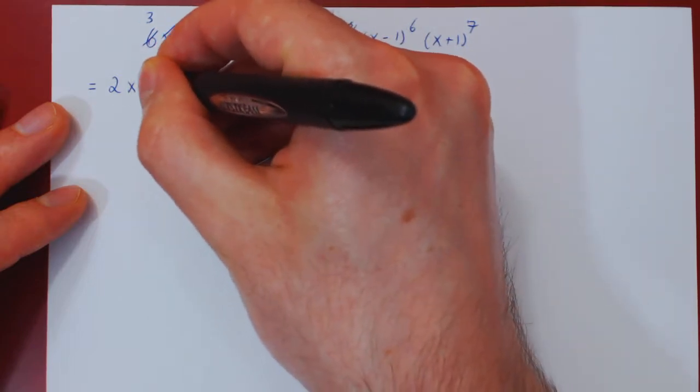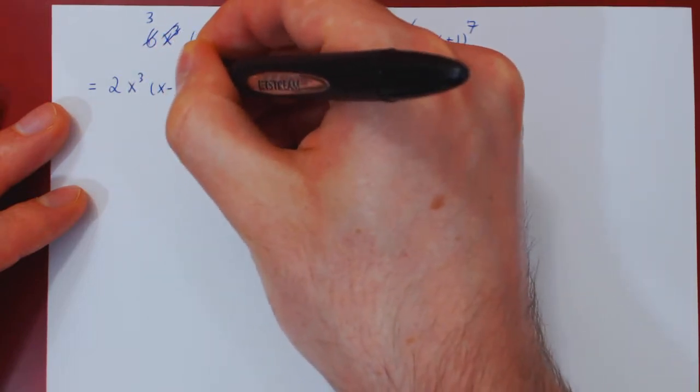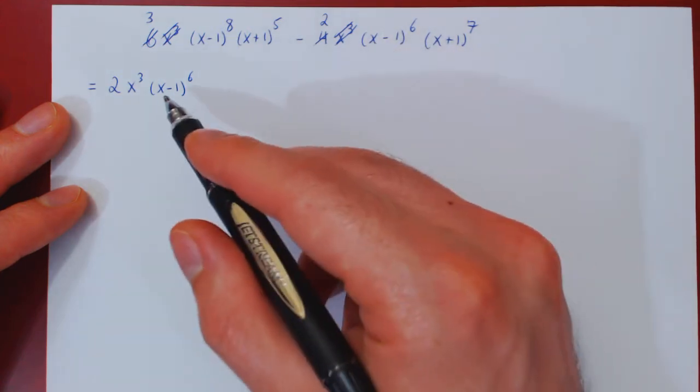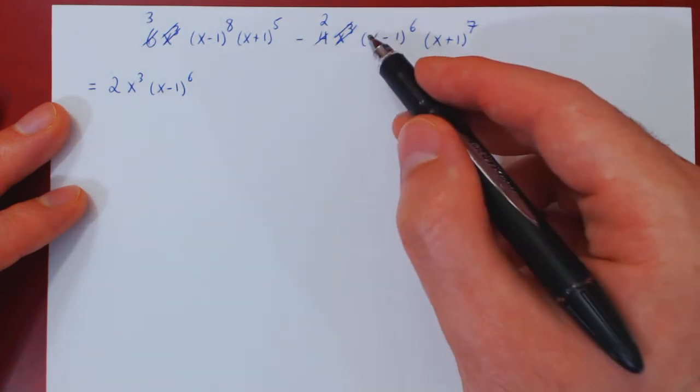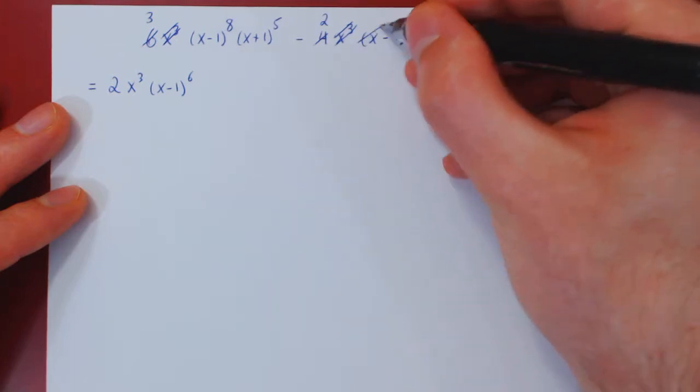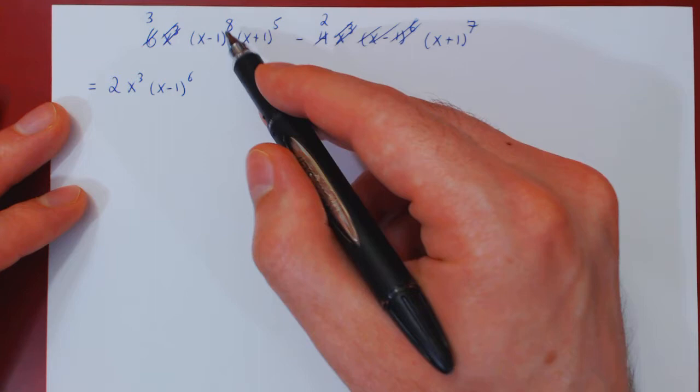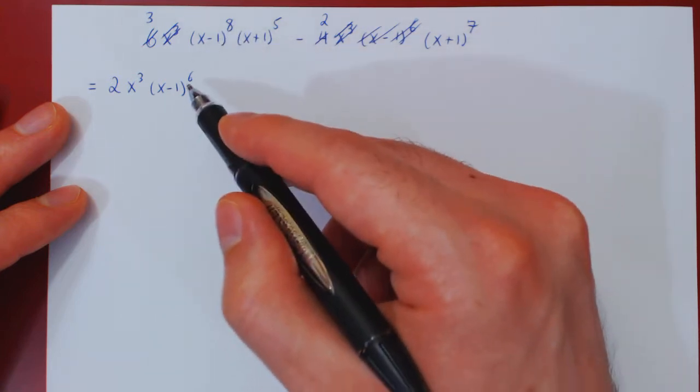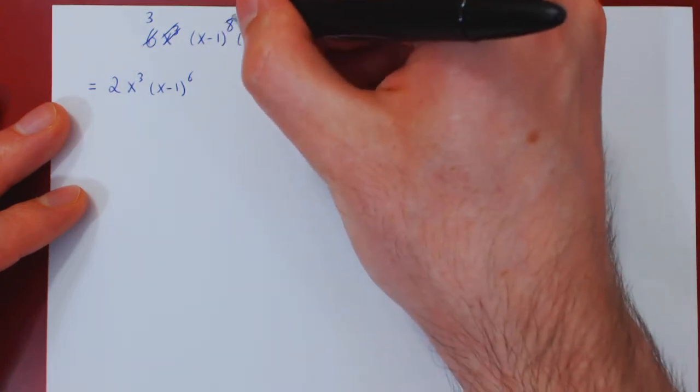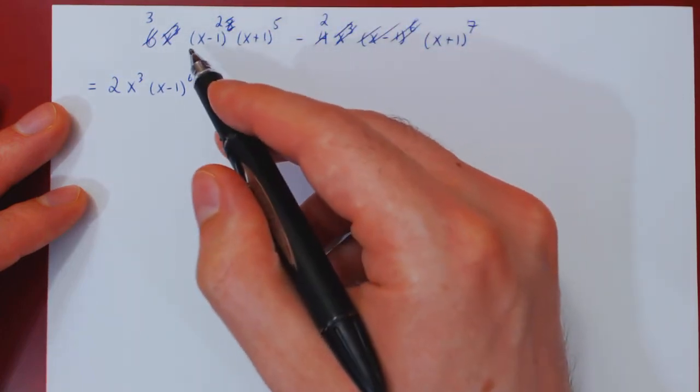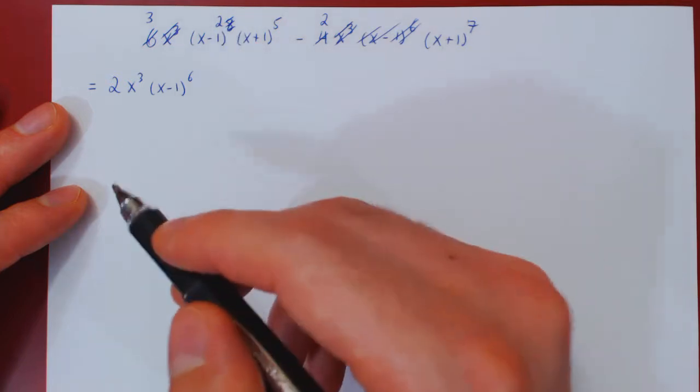Well, if you factor x minus 1 to the 6th from x minus 1 to the 6th, there's nothing left over. But here there were 8 factors of x minus 1, we took away only 6 of them, that leaves us with 2 factors remaining. So we're left here with a factor of x minus 1 squared.